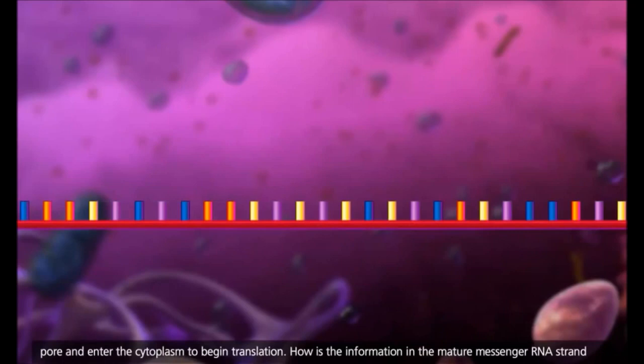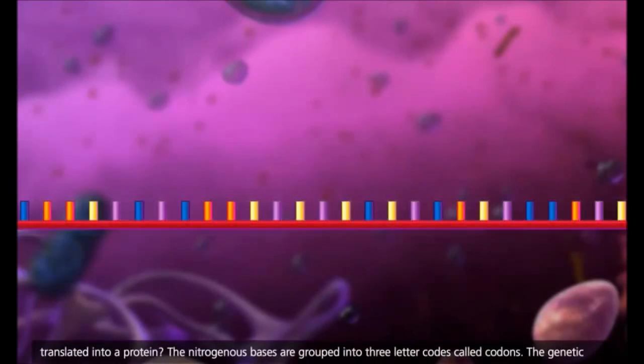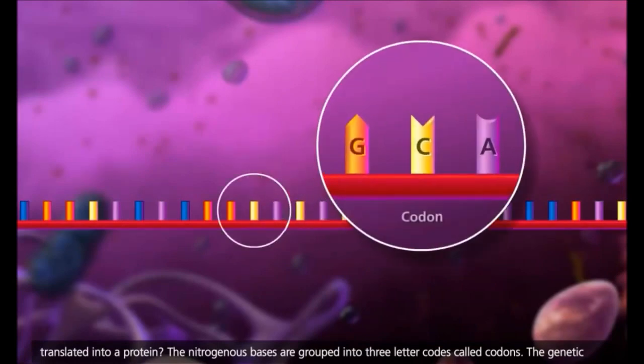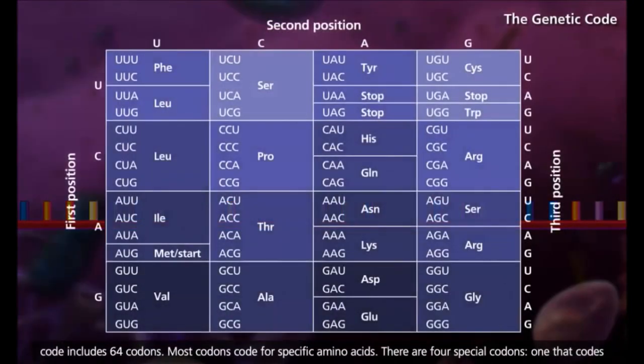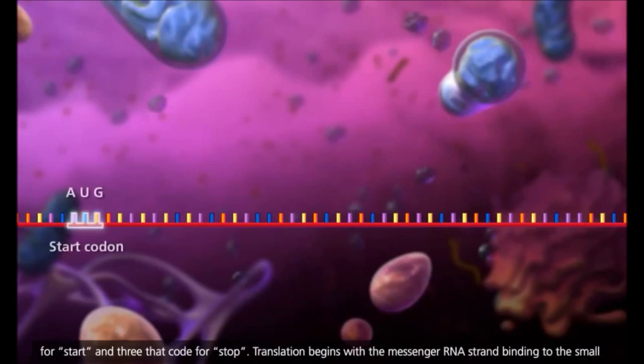How is the information in the mature messenger RNA strand translated into a protein? The nitrogenous bases are grouped into three letter codes called codons. The genetic code includes 64 codons. Most codons code for specific amino acids. There are four special codons: one that codes for start and three that code for stop.